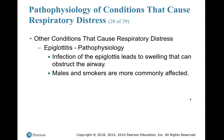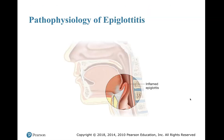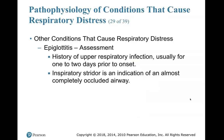Epiglottitis pathophysiology is an infection of the epiglottis. It causes swelling that can obstruct the airway. Males and smokers are more commonly affected, and young children get this more than adults. When we swallow, the epiglottis blocks off our trachea so we don't swallow food down our airway. Assessment: history of upper respiratory infection, usually one or two days prior to onset. Inspiratory stridor is an indication of an almost completely occluded airway.